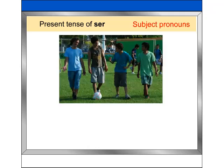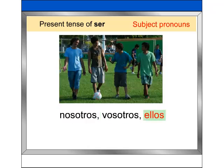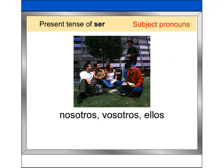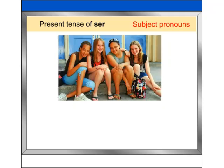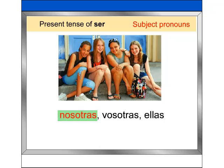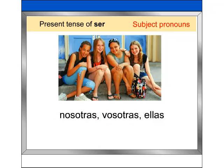The masculine plural forms nosotros, vosotros, and ellos can refer to a group of males or a mixed group of males and females. The feminine plural forms nosotras, vosotras, and ellas can only refer to a group of females.